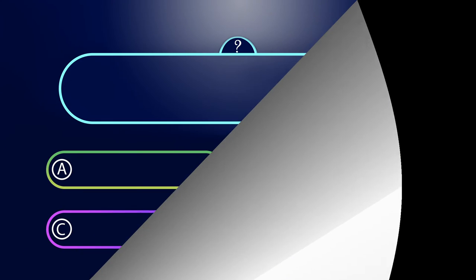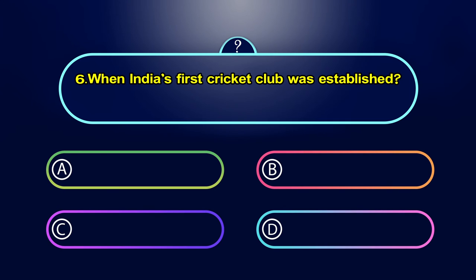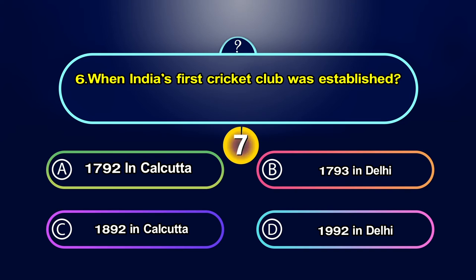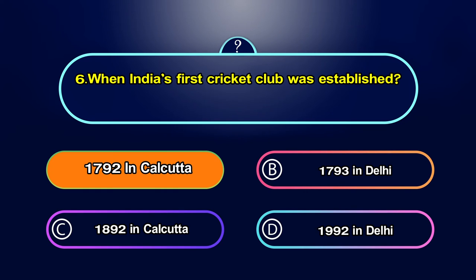When was India's first cricket club established? Option A. 1792 in Calcutta, Option B. 1793 in Delhi, Option C. 1892 in Calcutta, Option D. 1992 in Delhi. Your time starts now. The answer is A. 1792 in Calcutta.